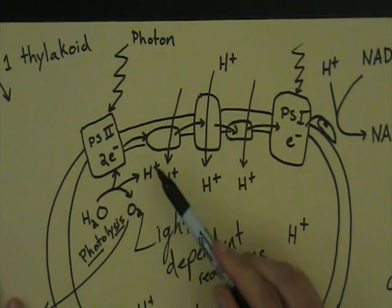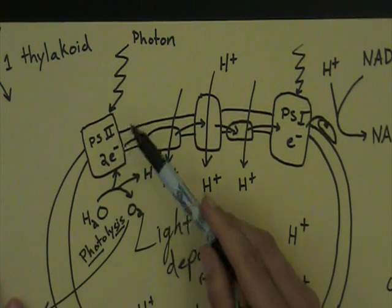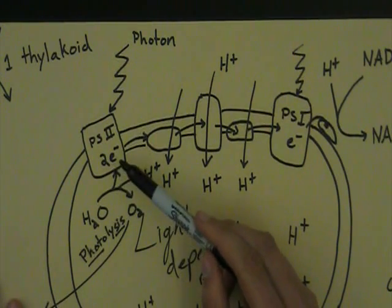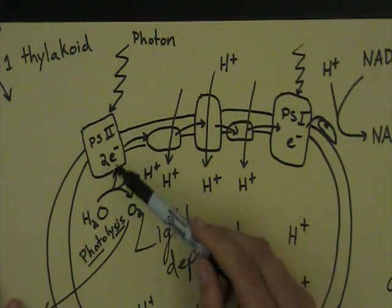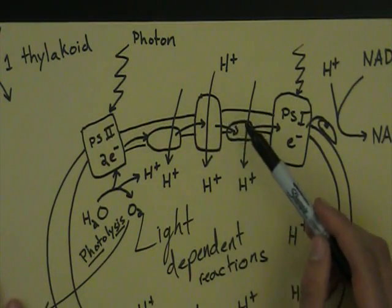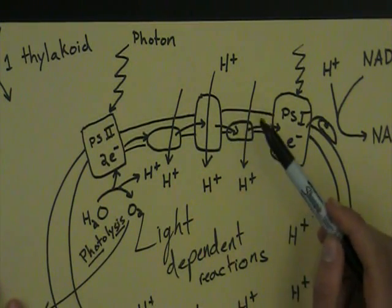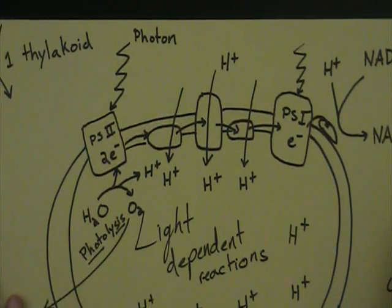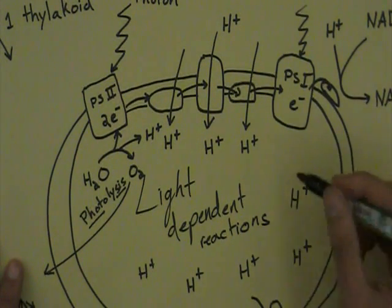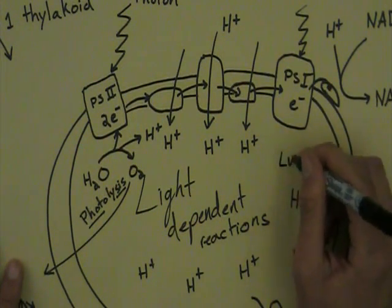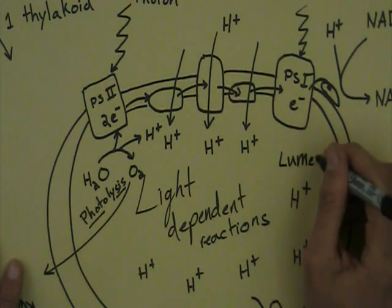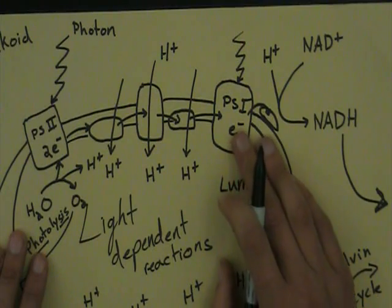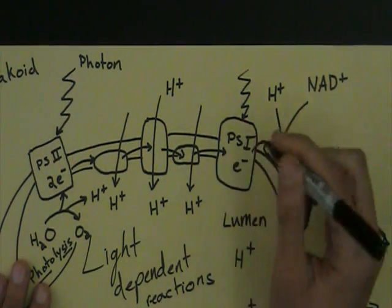Photolysis, the splitting of water, happens after photosystem II has excited electrons. The electrons from photolysis are to replace those that have been excited. The electrons lose energy as they move down an electron transport chain, causing hydrogen ions to move into the thylakoid lumen. That's just another name. The lumen is another name for the space inside the thylakoid. At photosystem I, the electrons are excited again by another photon of light.